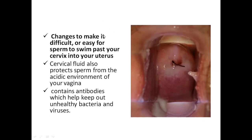So these are the three advantages of cervical fluid: it allows sperm to pass through during ovulation and makes it difficult during the luteal phase; it neutralizes the acidic vaginal environment to protect sperm; and it harbors antibodies to kill unhealthy bacteria and viruses. This image from my live consultancy shows the cervix — these are the vaginal walls, this is the cervix, and this is the channel through which sperm goes inside, with the uterus on the other side.